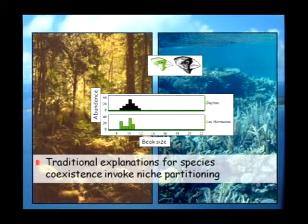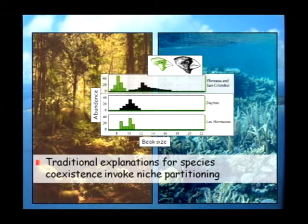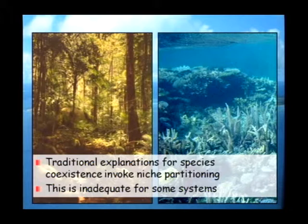A classic example of niche partitioning comes from Darwin's finches — Geospiza fuliginosa and Geospiza fortis. When these species appear in isolation on islands, the range of beak sizes is pretty similar for the two species. On islands where they co-occur, however, fuliginosa has evolved a smaller beak and fortis has evolved a larger beak. Beak size correlates quite strongly with the size of seeds consumed, making this a good example of evolution driving species to reduce overlap in resource use and facilitate coexistence.